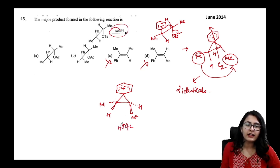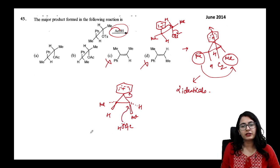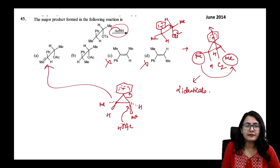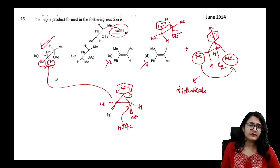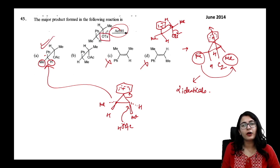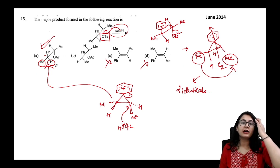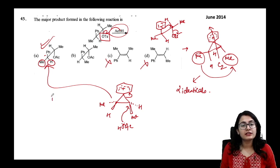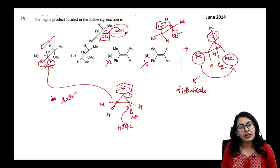Acetic acid attacks either position of the phenonium ion to give the same product — a homomer. Methyl is below, hydrogen is above, and the phenyl returns to the same carbon with retention. The OTs leaving and the acetate arriving on the same carbon means two inversions give retention.